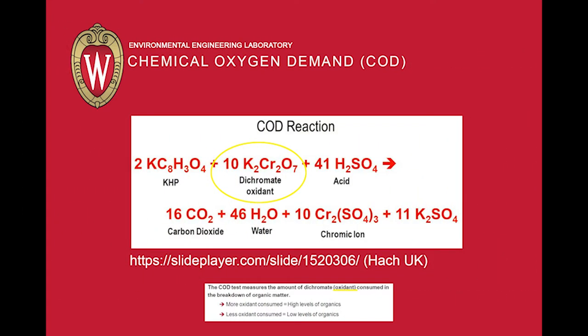For those interested in the chemical equation, this comes from a Hach UK slideshow. They explain the results looking at the amount of oxidant — the potassium dichromate — that is consumed as the organic matter is broken down during the digestion process. More oxidant consumed equates to higher levels of organics in the sample.